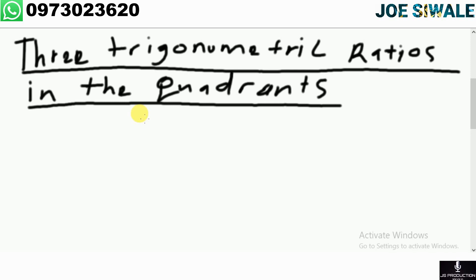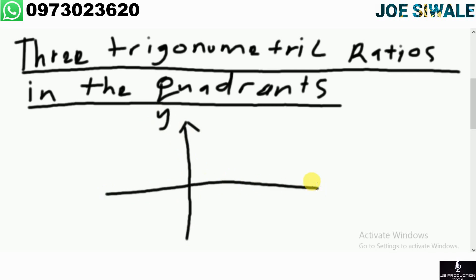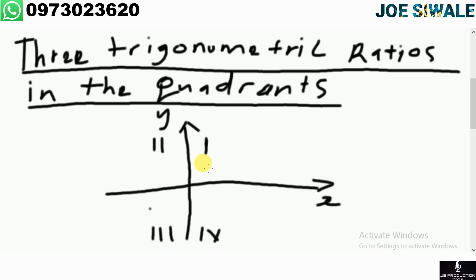So let me draw the four quadrants. These are the four quadrants: the first, the second, the third, and the fourth. In the first quadrant, all three trigonometric ratios are positive.